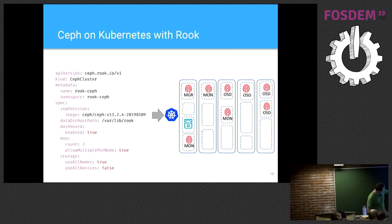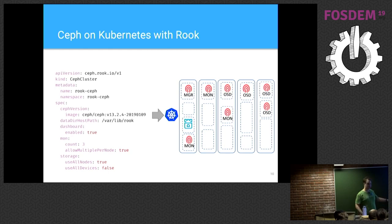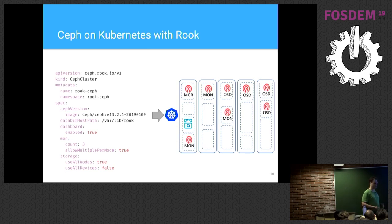Coming back to the cluster object: we have the dashboard section where you set `enabled: true`. We can control the monitors — like how many we want. If we want multiple monitors on one node, this is useful if you have only three nodes. But if you have more than three nodes, you normally want to disable that option, because then you always have room to move a monitor from a failed node to another available node.